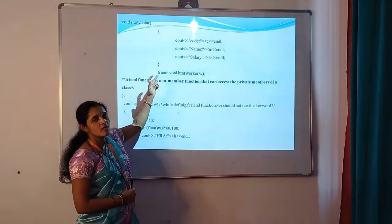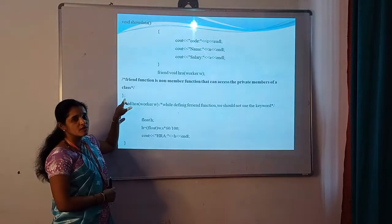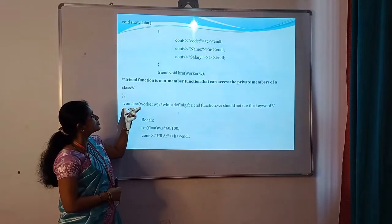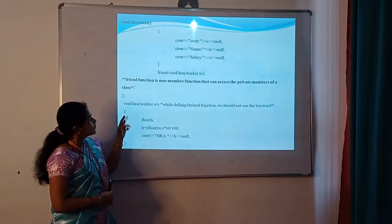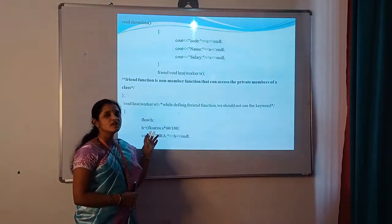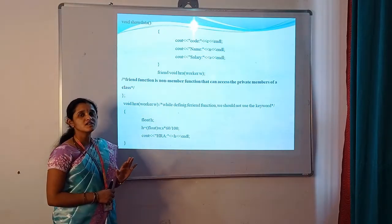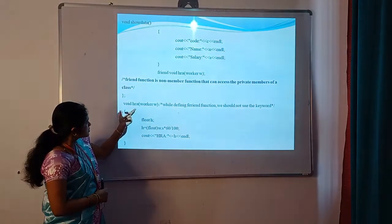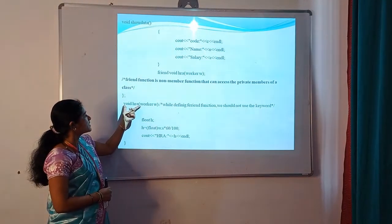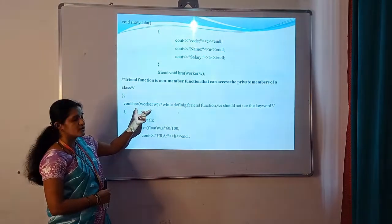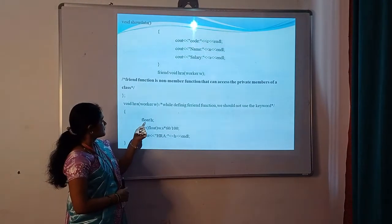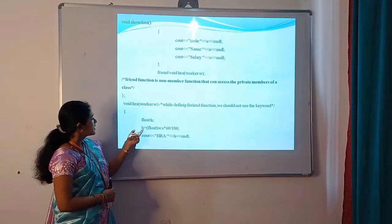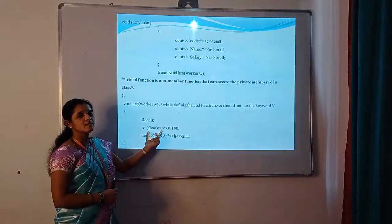The main part of our program: friend void hra(worker w). Here, friend is a keyword, void is the return type, hra is the function name, worker is the class, and w is a temporary class object passed as a parameter from the main function. This is the declaration, so we use a semicolon. The friend function is a non-member function that can access the private members of a class. We declare it using the friend keyword, which provides accessibility to the private data of the class. When defining the friend function outside the class, we do not use the friend keyword — the friend keyword is only used during the declaration inside the class.